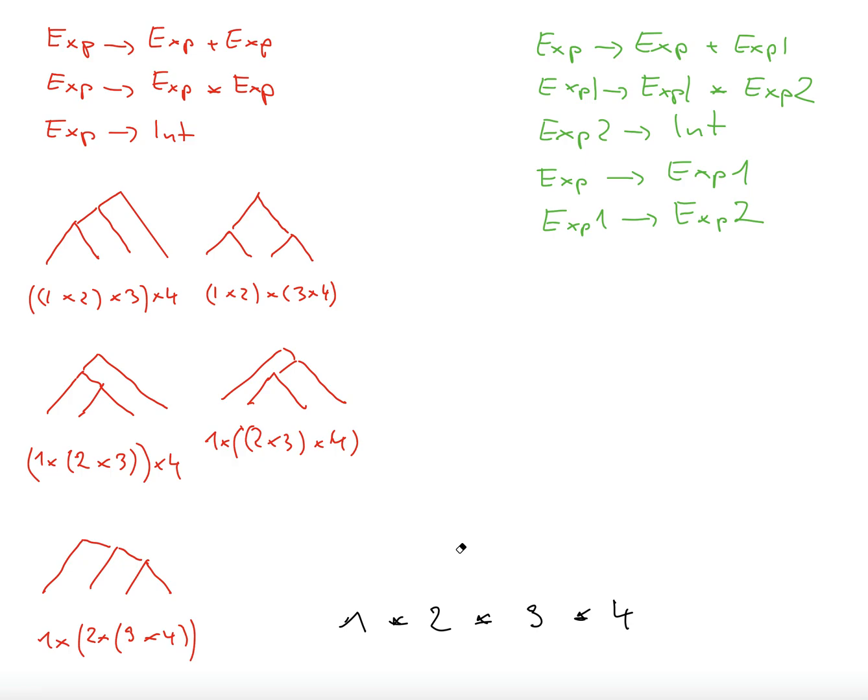So this is one reason why it's interesting to have only one parse tree. The meaning of the expression can depend on that. Another is also efficiency. We don't want to have to make too many guesses of how to find parse trees. We want an efficient deterministic procedure.